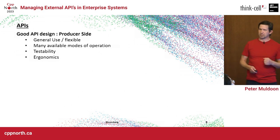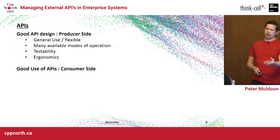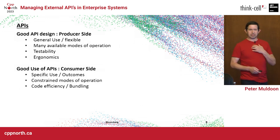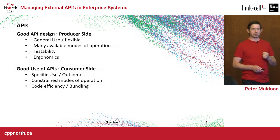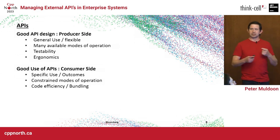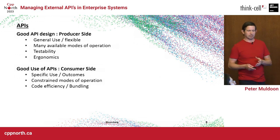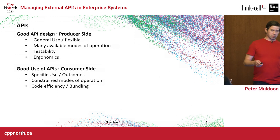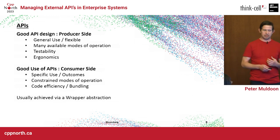Those are some things I look for in an API when dragging it into my enterprise system. But what about the good use of APIs — from the consumer side? I'm looking for specific use cases and specific outcomes. I do not want an API used 10 different ways to do the same thing, nine of which are probably not great. I want to constrain my API. If you look at the top two bullets on each side, they go the opposite way: one says make it as general as possible, and as a user I want it specific. We bridge that gap with a wrapper abstraction.